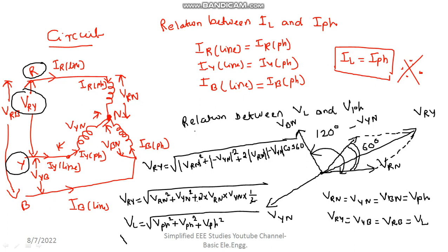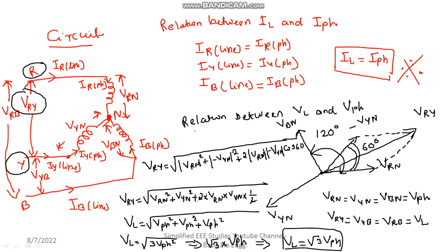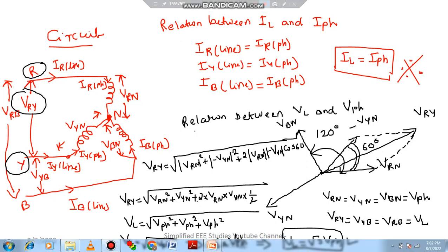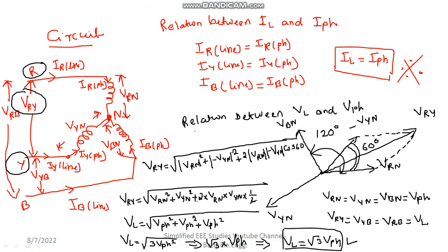So VL equals the square root of 3 Vphase squared, which is nothing but root 3 times Vphase. So line voltage equals root 3 times phase voltage. In every star connection, the line voltage can be written as root 3 times phase voltage. The line voltage is always greater than phase voltage in star connection, and it is suitable for high-voltage, low-current applications.